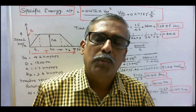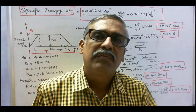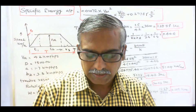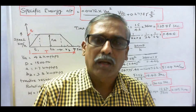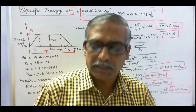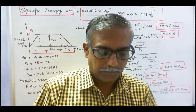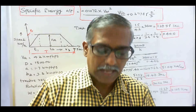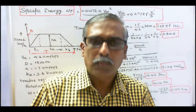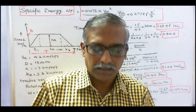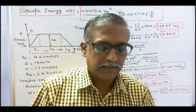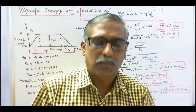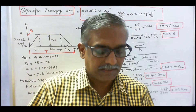In this class we work out some problems on specific energy consumption. Problem number one: an electric train has an average speed of 42 km per hour on a level track between stops 1500 meters apart. It is accelerated at 1.7 km per hour per second and braked at 3.3 km per hour per second. Draw the speed-time curve and estimate the specific energy consumption.